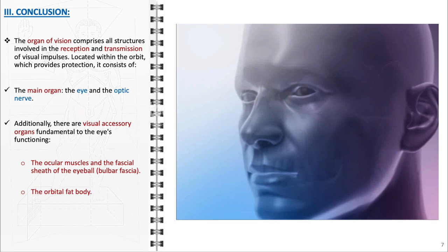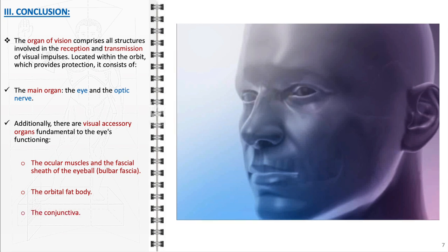The orbital fat body acts as a cushion around the eyeball, absorbing shocks and ensuring the eye is snugly fit within the orbital cavity, thus aiding in its protection and proper functioning. The conjunctiva, a delicate membrane lining the inner surface of the eyelids and extending over the sclera, keeps the front surface of the eye moist and lubricated, facilitating smooth eye movement and protecting against foreign particles.